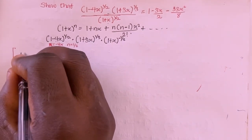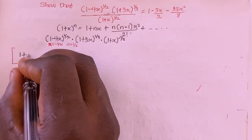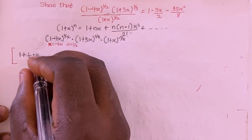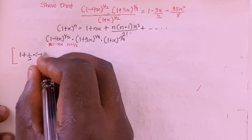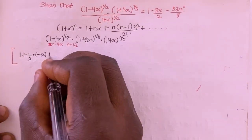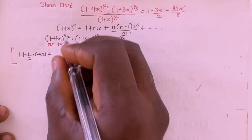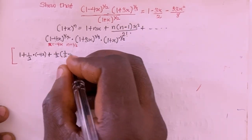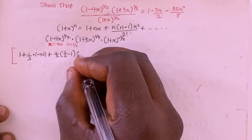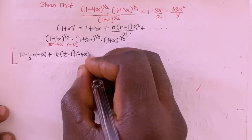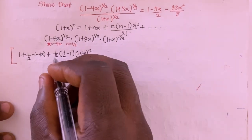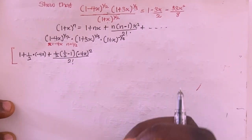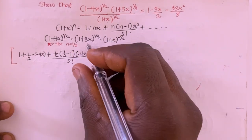For the first factor, the expansion gives: 1 + (1/2)(-4x) plus (1/2)(1/2 - 1)(-4x)² divided by 2 factorial, plus other terms. That covers the expansion of (1 - 4x)^(1/2).